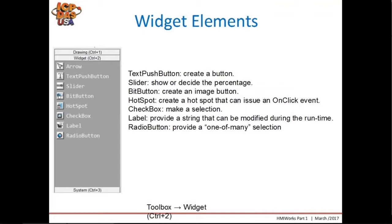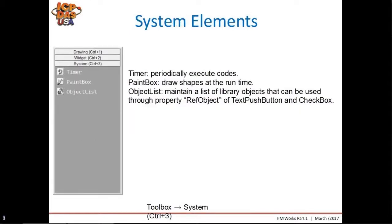The second section, Widgets, has items that can be changed during runtime. These include: Text Push Button, to create a button that can show text; Slider, to show or set the percentage of a value; Bit Button, to create an image button for toggle; Hotspot, to create an area that can issue an onclick event or go-to-frame function; Checkbox, so that the user can choose a selection or show a picture; Label, to provide a string that can be modified during runtime; and Radio Button, to provide a one-of-many selection.